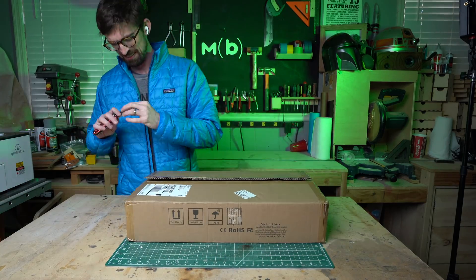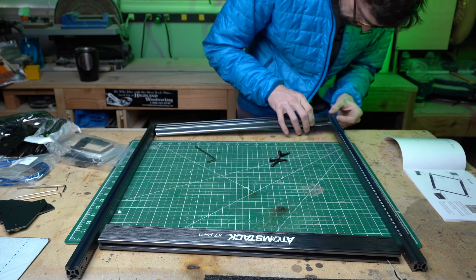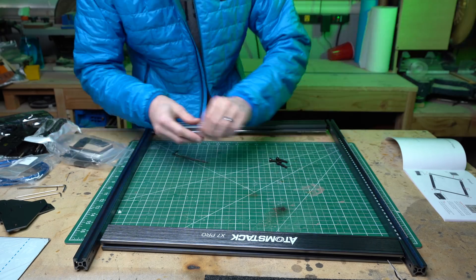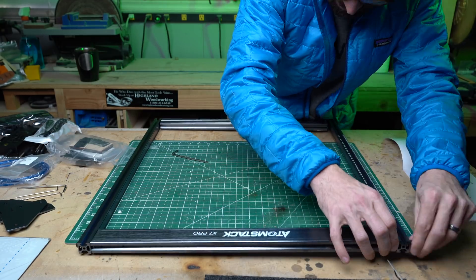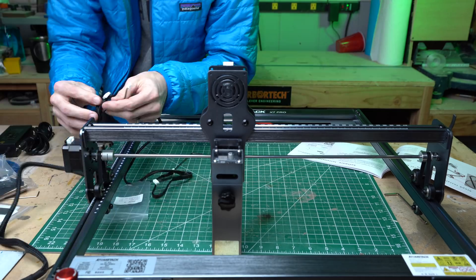Right off the bat, it comes in a pretty standard box. The assembly doesn't take long at all. There's a little bit more to assemble with this than some of the other machines, but it still takes about 30 minutes. You're just putting the frame together, adding in these legs, then attaching the laser module and hooking up the wires.